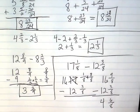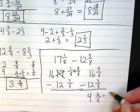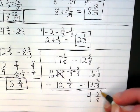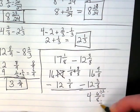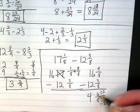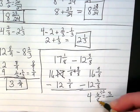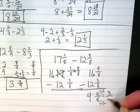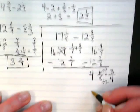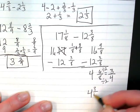This fraction can be reduced. If I take 2 out of both the numerator and denominator, 6 divided by 2 is 3, 8 divided by 2 is 4. So my final answer is 4 and 3 fourths.